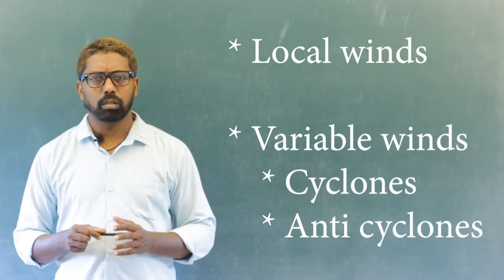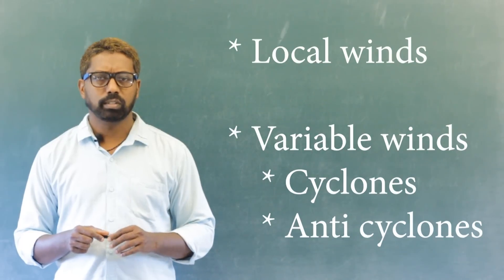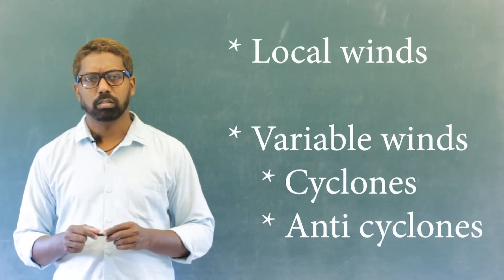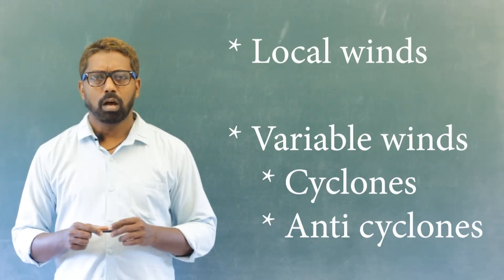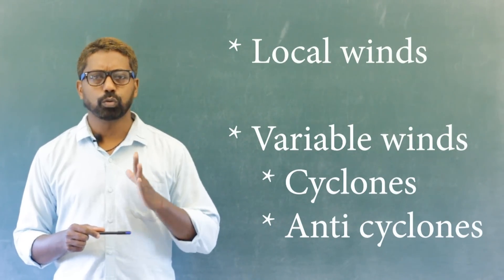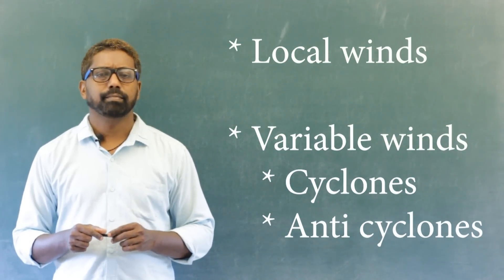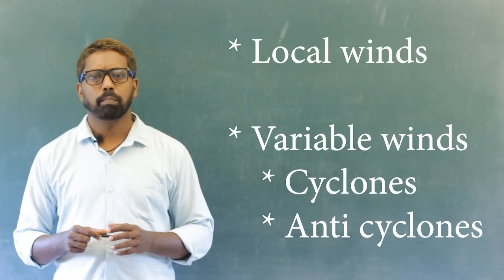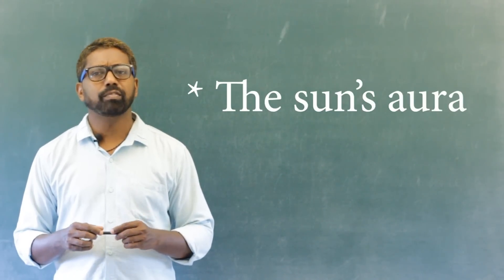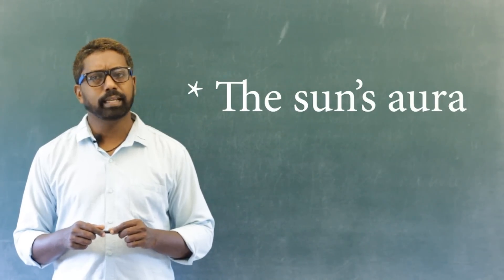Next: variable winds. Variable winds are two: cyclones and anticyclones. And the last content of this chapter is the sun's aura.